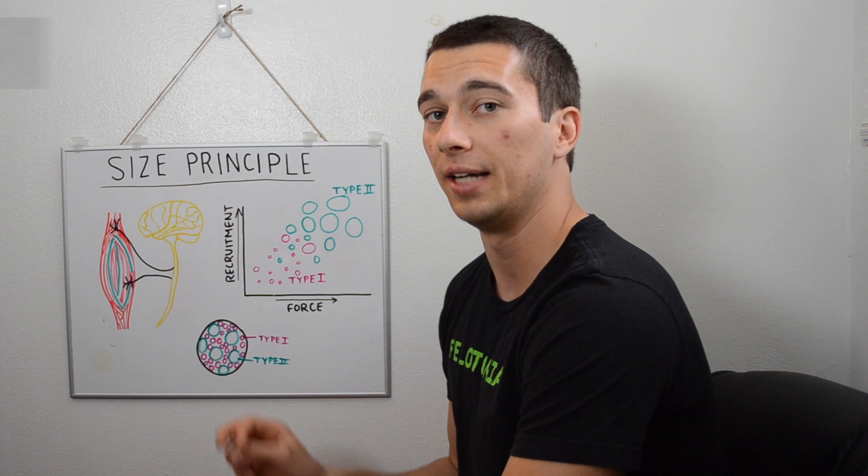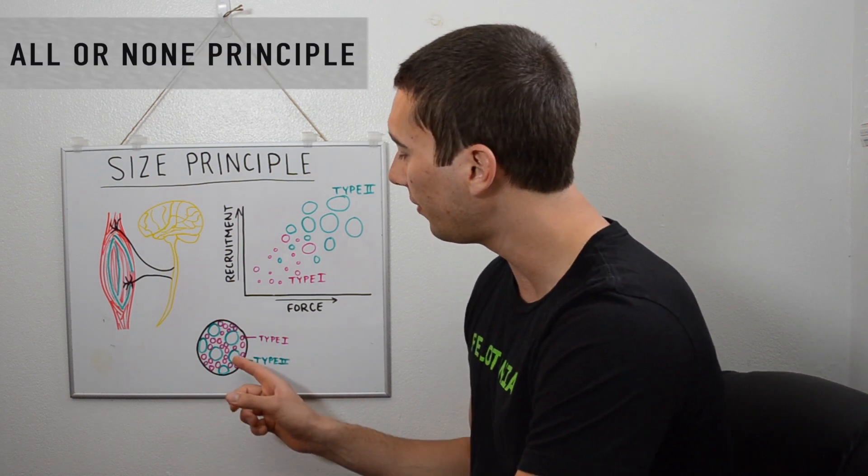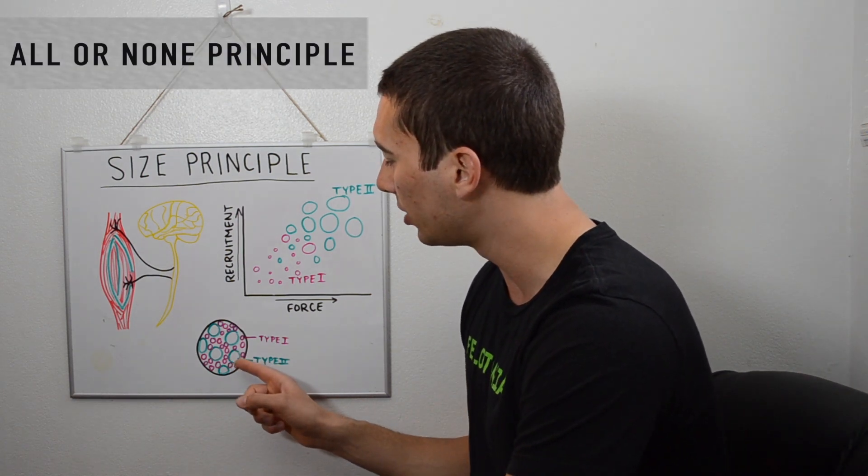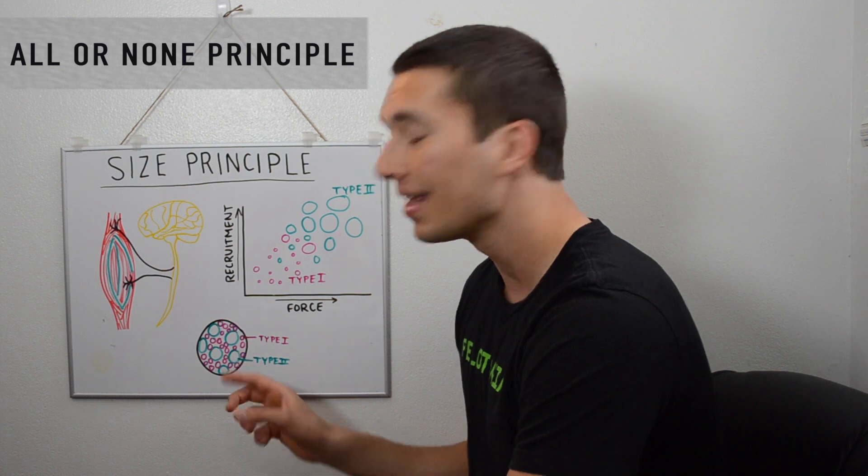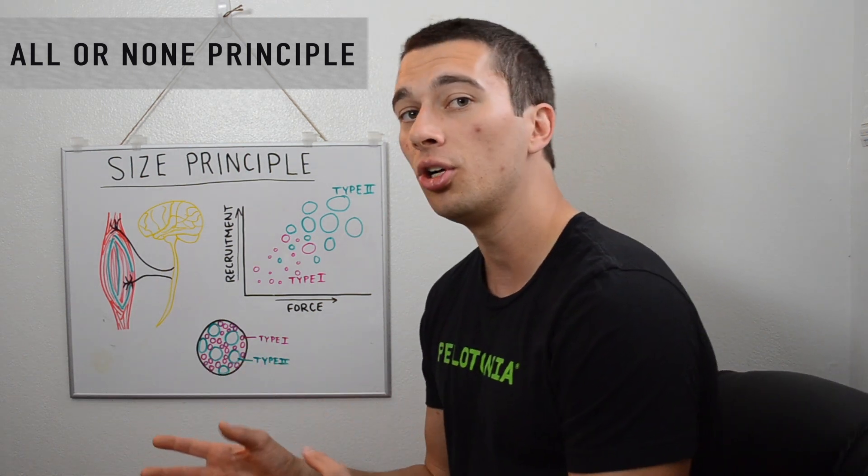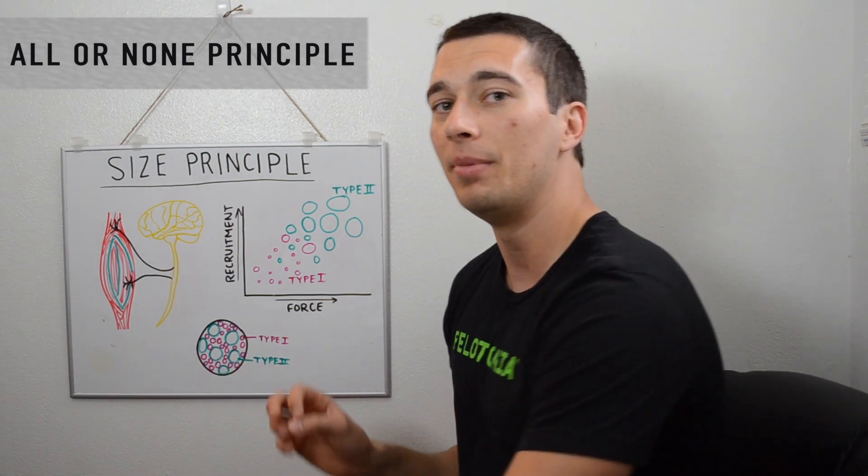Something to think about as well is that muscles are recruited all or none with the all-or-none principle, meaning that if we have a hundred muscle fibers in this type 2 motor unit right here, either we activate all 100 or we don't activate any.